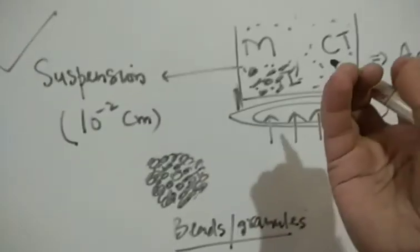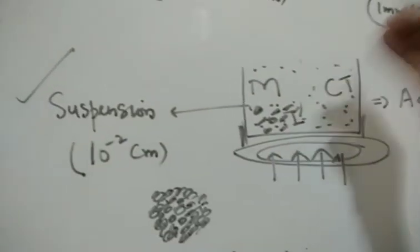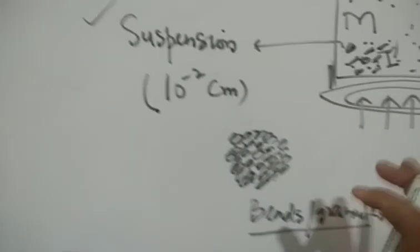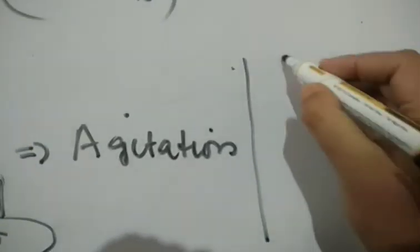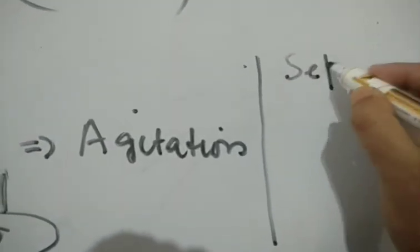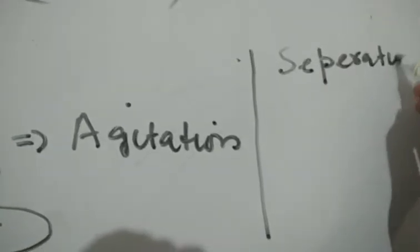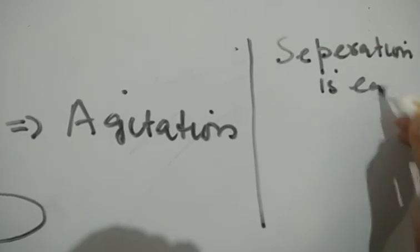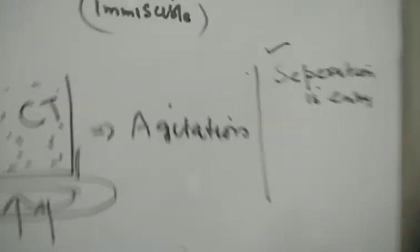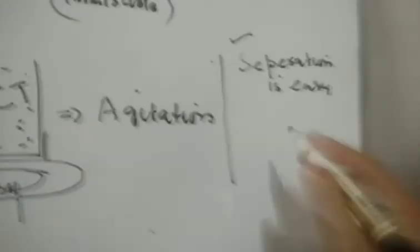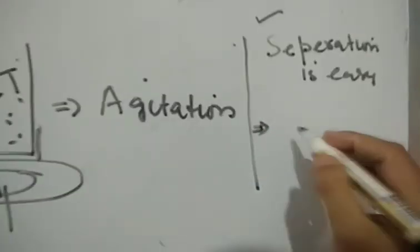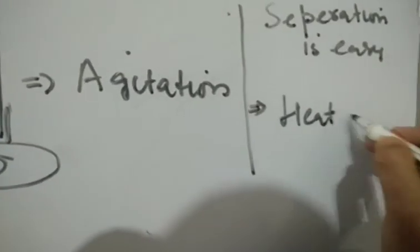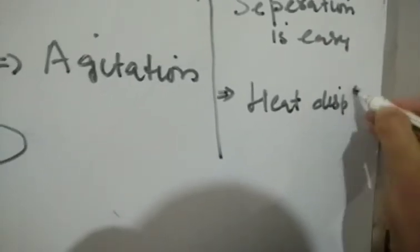To separate the polymer from rest of the solvent or from the rest of the contents - in this case, the separation of polymer is very easy from rest of the solution. Number one. Number two: since you have water as a solvent, heat dissipation is easy. Heat dissipation - there is no issue, that is easy.